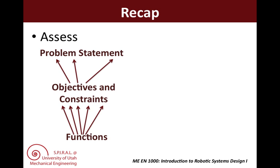For instance, if you're designing a chainsaw, you will probably have an objective of 'be safe,' which will need functions of 'stop motor automatically,' 'block fingers,' and you can probably think of more. Once you and your team have agreed on the problem statement, objectives, constraints, and functions, you move on to brainstorming.